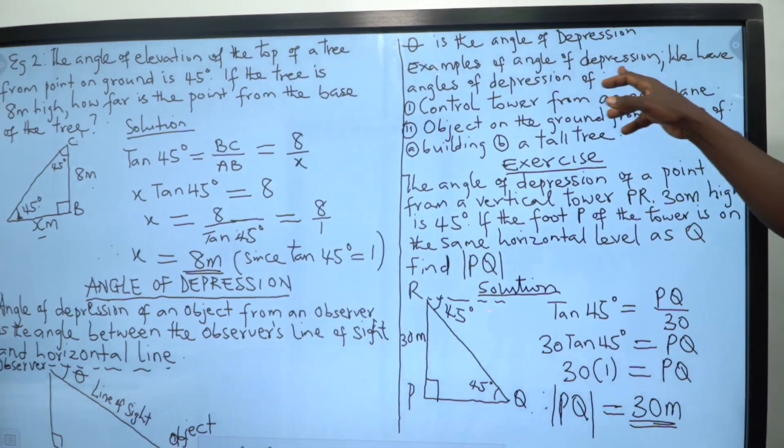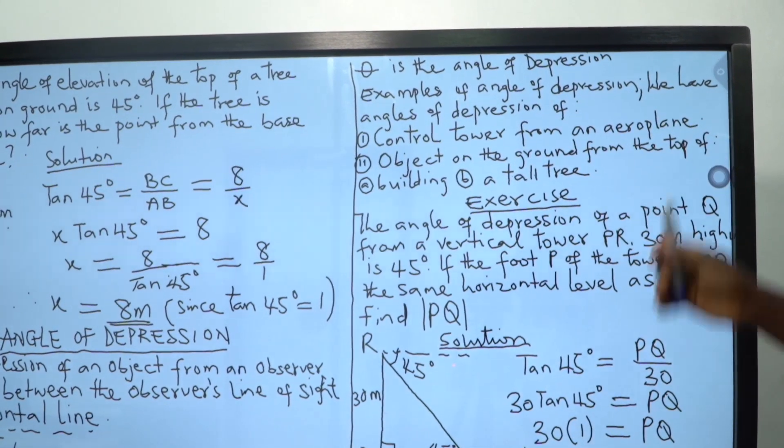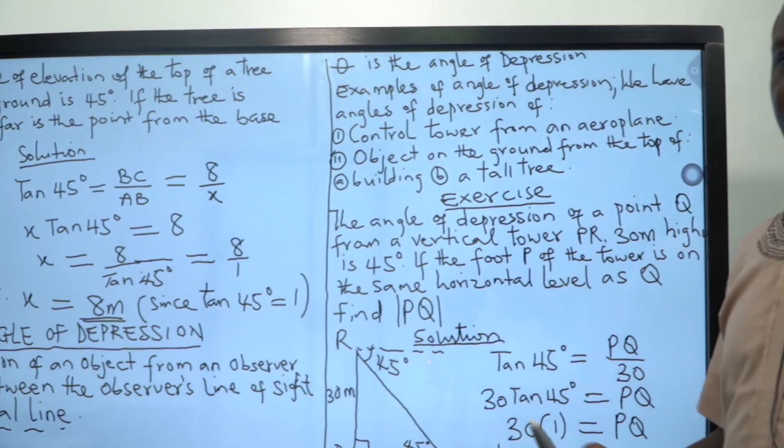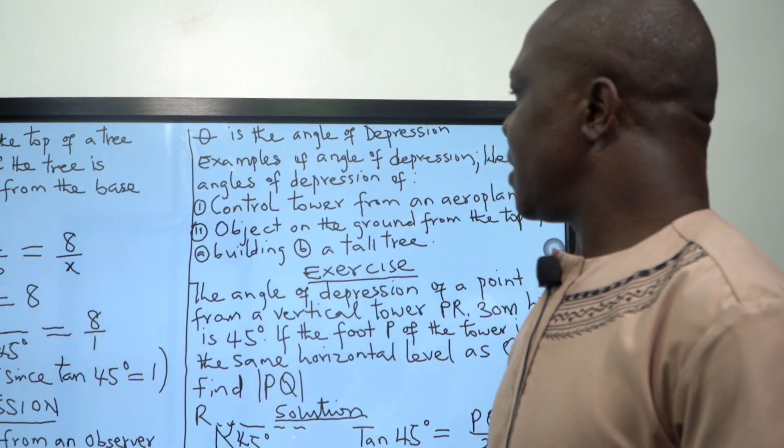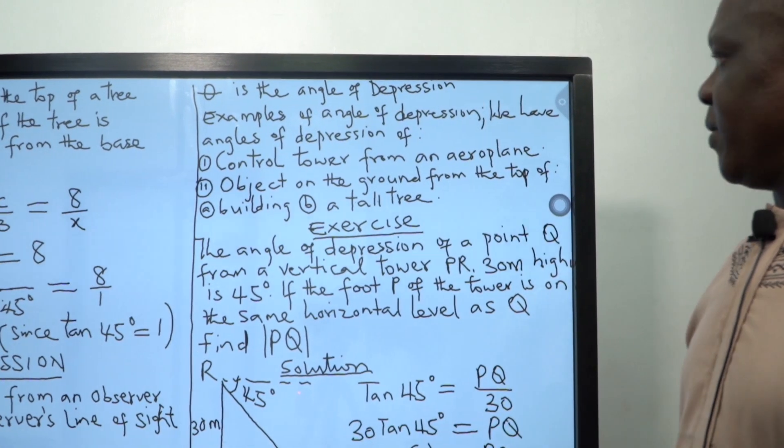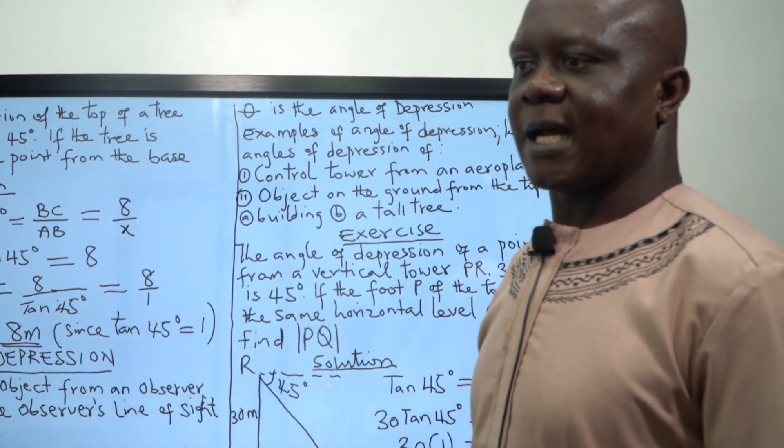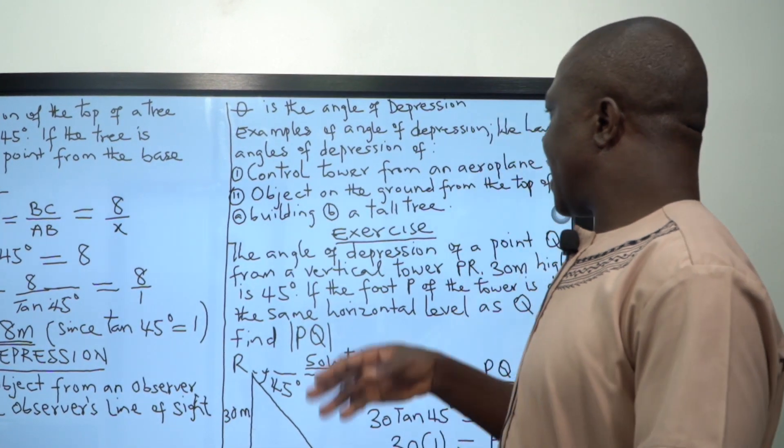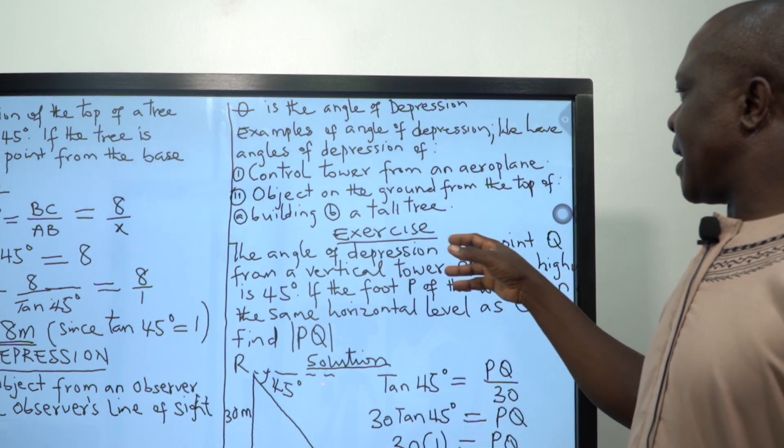We say that theta is the angle of depression. If angle of depression, we say that examples of angle of depression, we have maybe as I have pointed out now, if you are standing on the top of a tower, if you are standing on the top of a building, if you are standing on top of a tree, these are places one can stand and be able to make an angle of depression.